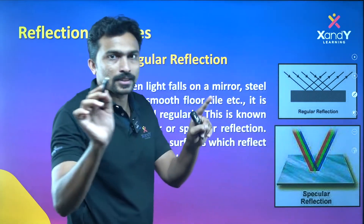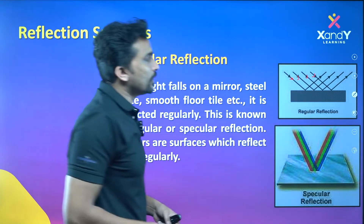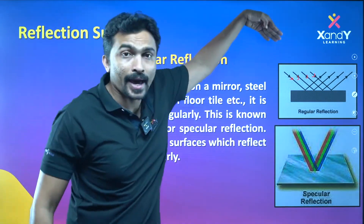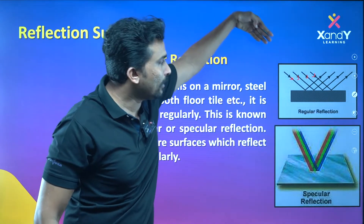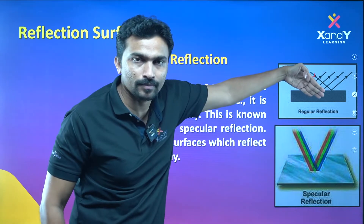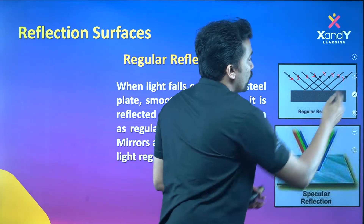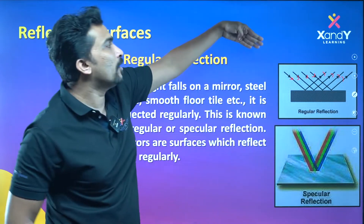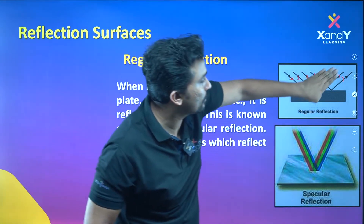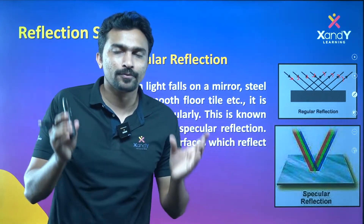Incoming light rays — 1, 2, 3, 4 — they are at the same distance; they are parallel. Parallel means the same distance apart. We can show four fingers to illustrate: 1, 2, 3, 4 — they are parallel. This is regular reflection.